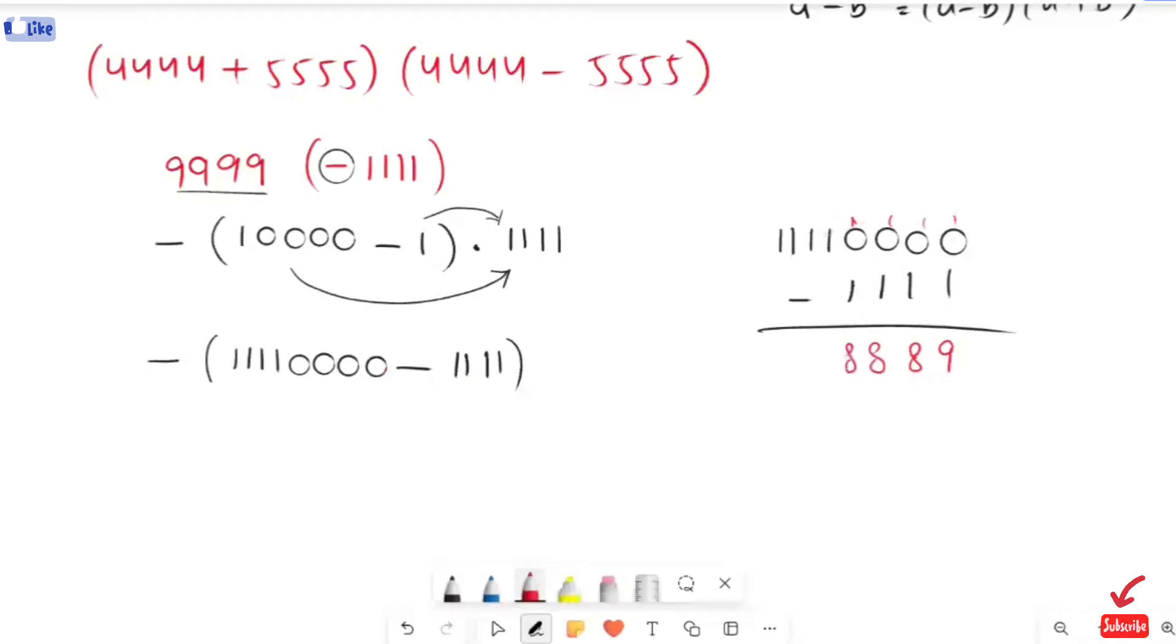So here, this 1 gives 1 to this, so here 0 is remaining: 0, 1, 1, 1, 1. So the answer for the above expression we have minus 11,108,889.